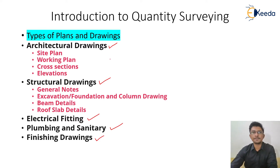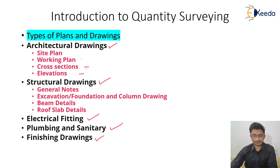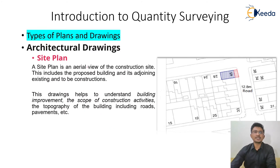The first category is architectural drawings, which has four major parts: site plan, working plan, cross sections, and elevation. The first drawing the contractor receives is the architectural plan, and within that the first illustrative drawing is the site plan.